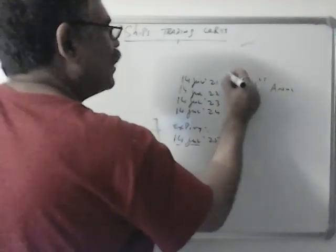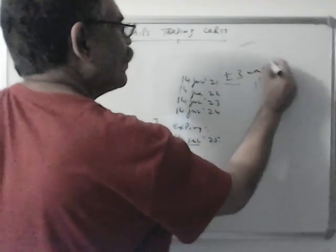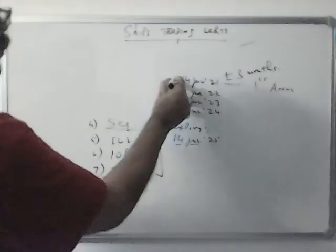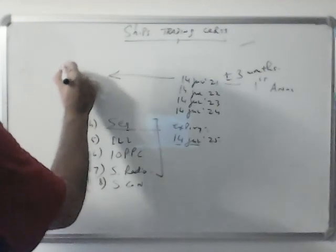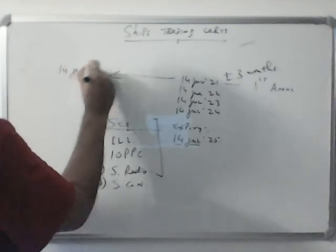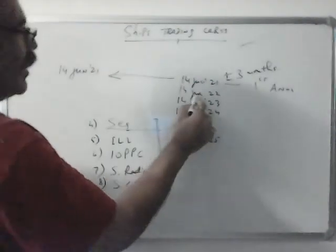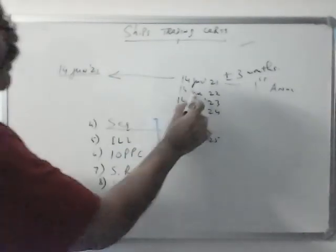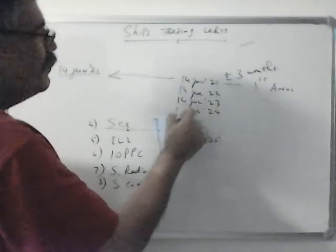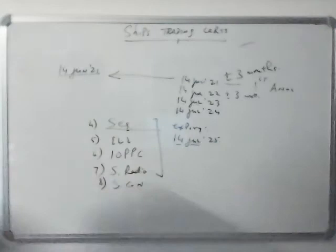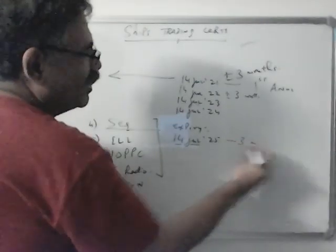Now all these dates have plus or minus three months flexibility. For example, if you did the first annual on 14 June, the next annual will still be due on the scheduled date. It has nothing to do with when the first annual was done. The day and month remain the same, and again there is plus or minus three months. The expiry renewal does not have plus, only minus three months.